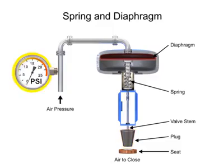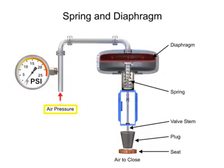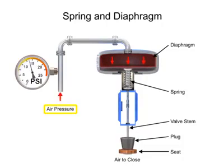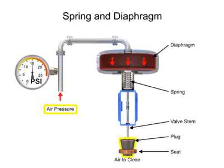A 15 psi pneumatic signal enters the housing at the top of the actuator. As pressure is exerted on the diaphragm, a downward force is applied against the spring which moves the restrictor. The diaphragm moves until it creates an equal but opposing force against the spring, at which time the motion stops as the plug meets the valve seat.